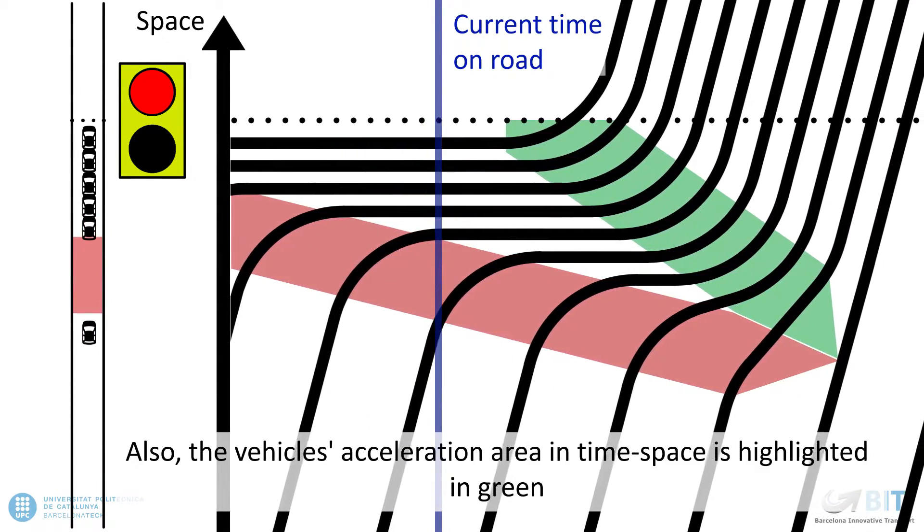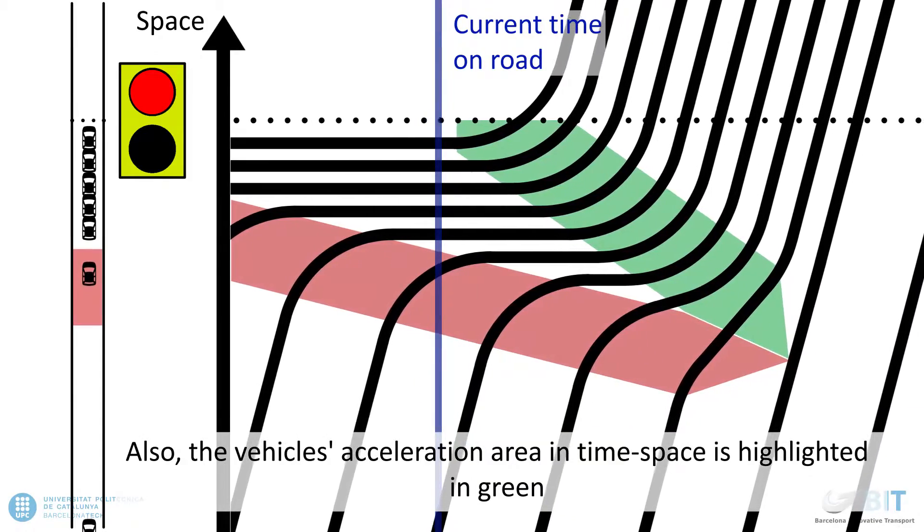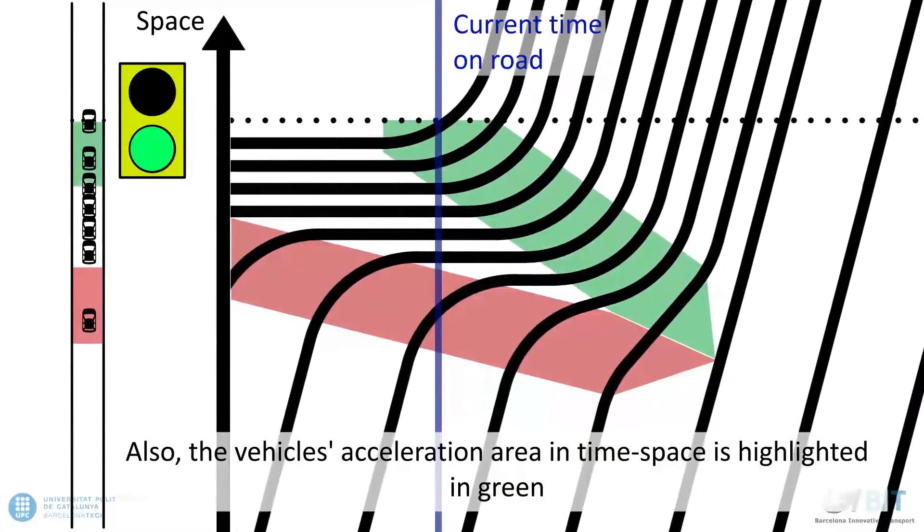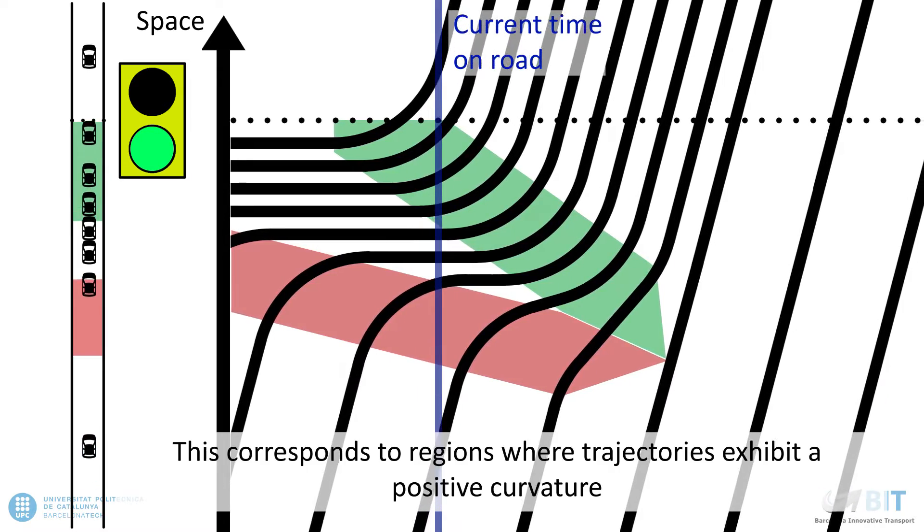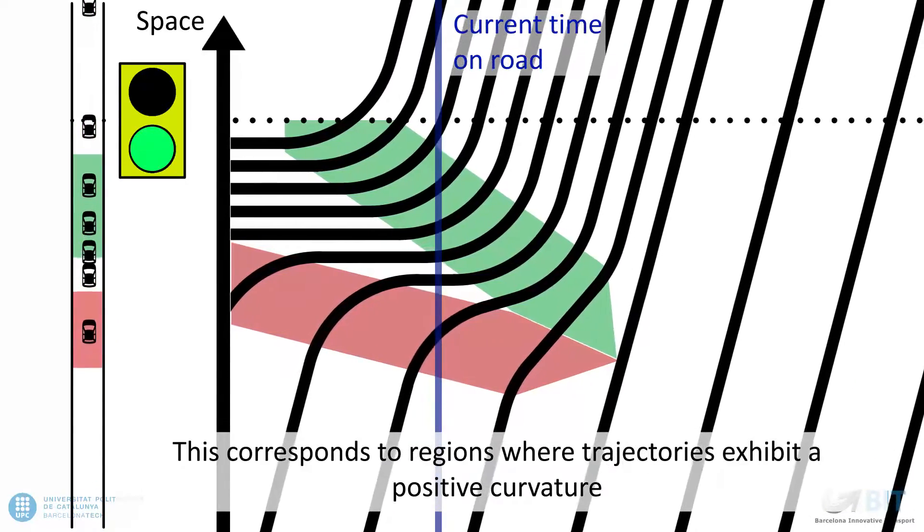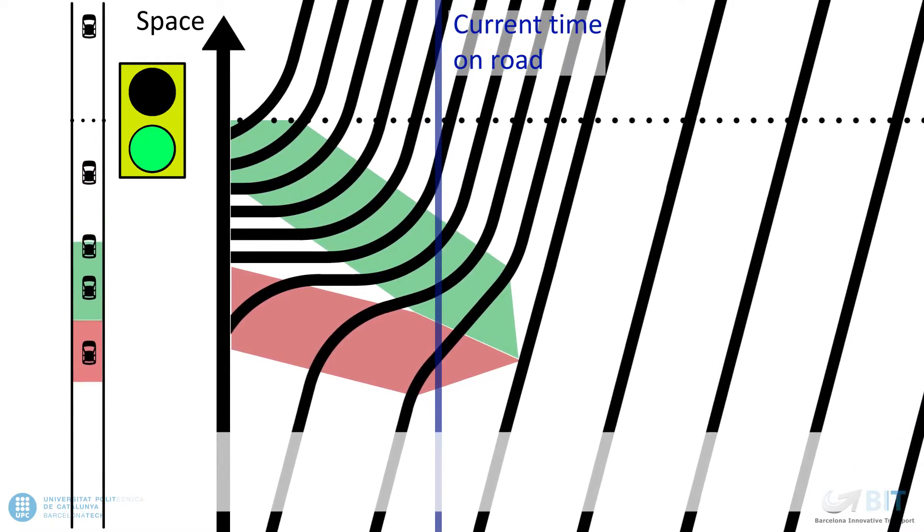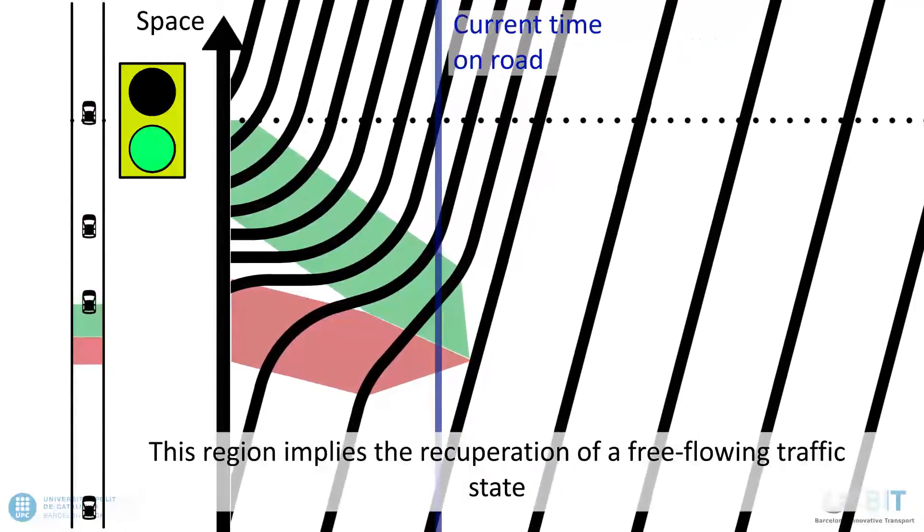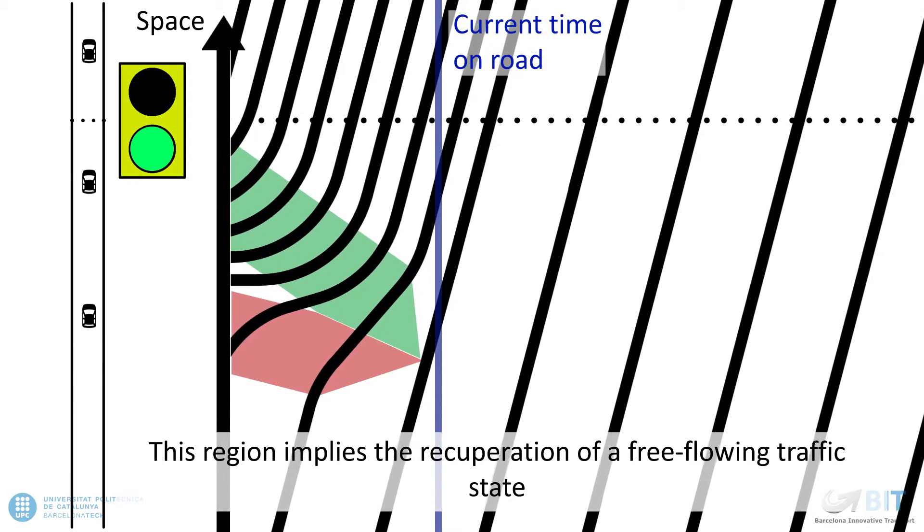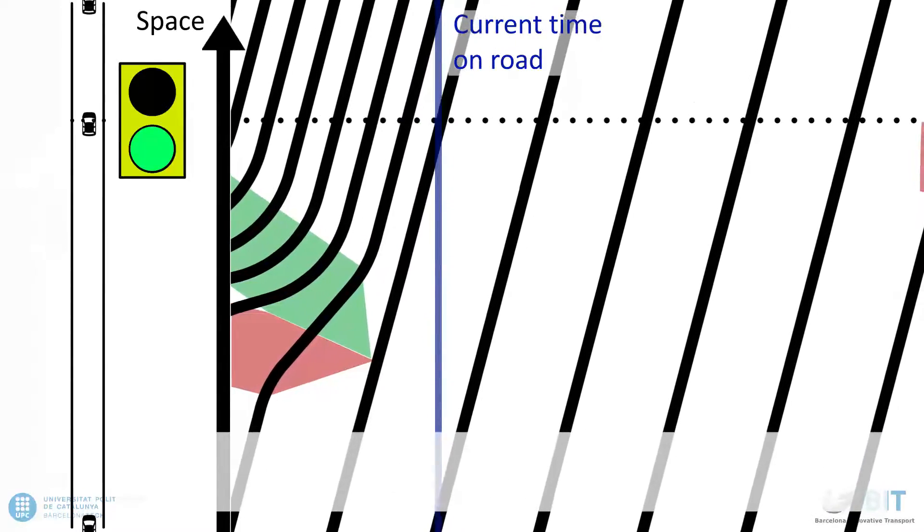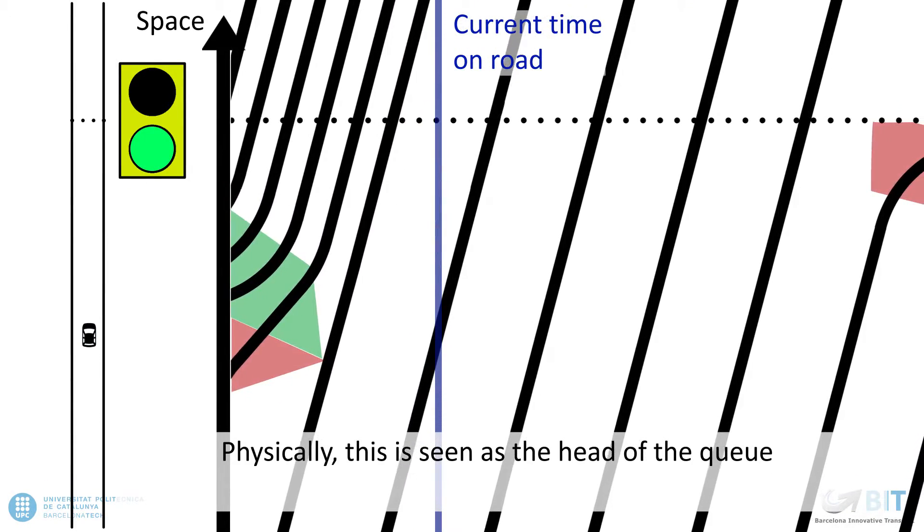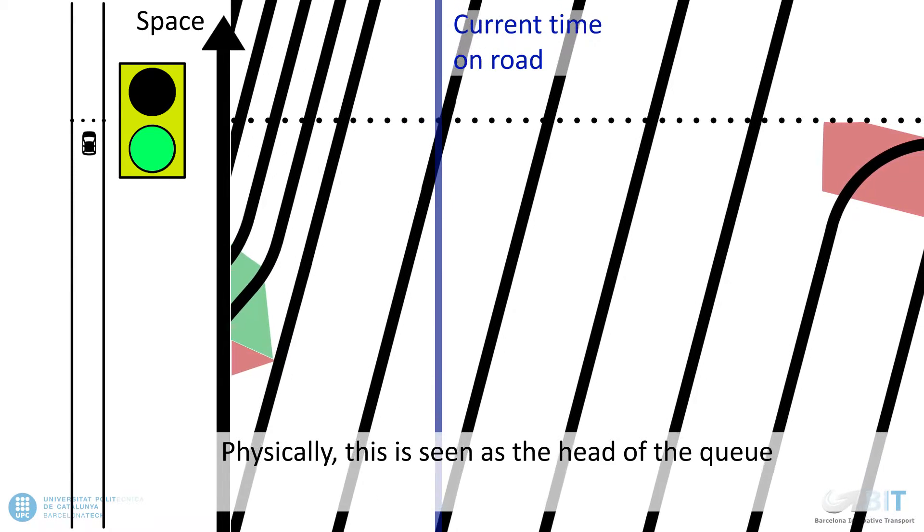Also, the vehicle's acceleration area in time-space is highlighted in green. This corresponds to regions where vehicle's trajectories exhibit a positive curvature. This region implies the recuperation of a free-flowing traffic state. Physically, this is seen as the head of the queue.